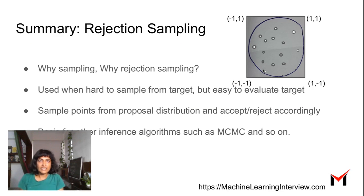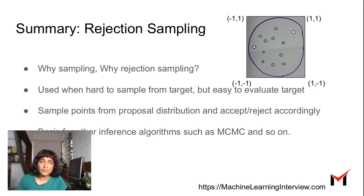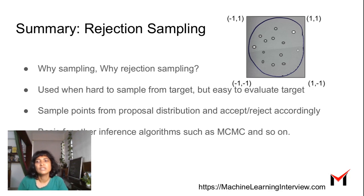To summarize: rejection sampling is used when we have distributions that are hard to sample from but easy to evaluate. The way it works is we sample a point from the proposal distribution — a simpler distribution — and then accept or reject that point according to the ratio of densities between the target distribution f(x) and the proposal distribution g(x). This algorithm is also the basis for many other MCMC algorithms like Metropolis-Hastings.